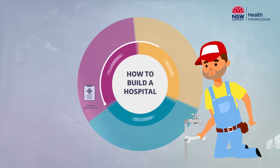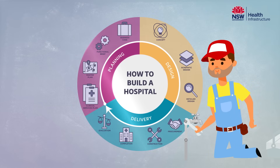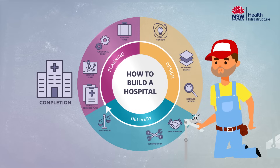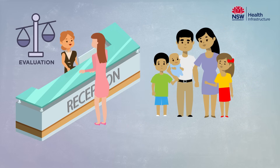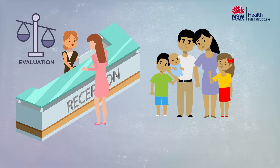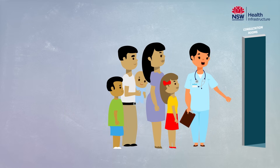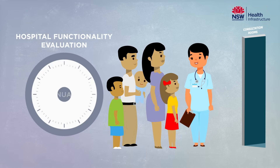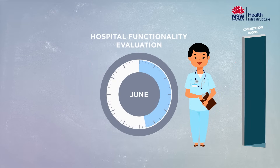Once construction is complete, we begin the commissioning phase. This involves checking and testing of all components and systems of the new facility. Staff orientation and training also occurs to ensure everyone is prepared to welcome the first patients through the door. Once staff and patients have moved into their new facility, Health Infrastructure continues to evaluate and assess the functionality of the new facility for several months, which also helps to inform our future hospital projects.